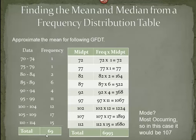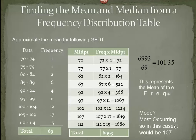69 means there were 69 data values originally in the data set. If I take that total and divide it by the sum of the frequencies, I have the mean of the frequency distribution table. The central tendency of those values is around 101.35.